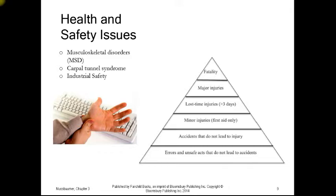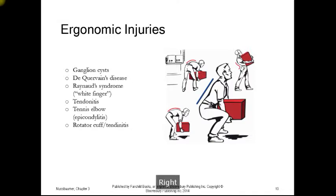But at the bottom, we have errors and unsafe acts that lead to accidents. And that's the majority of claims on workman's compensation. We lose productivity when people are out for back injuries. And back injuries can come from improper lifting. It can come from improper sitting as well. Every joint that we have in our body, if we use it in an improper manner over a long period of time, can indeed cause an injury.